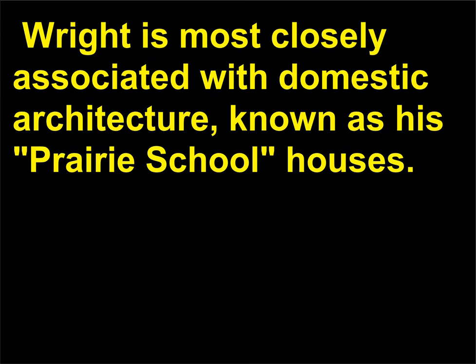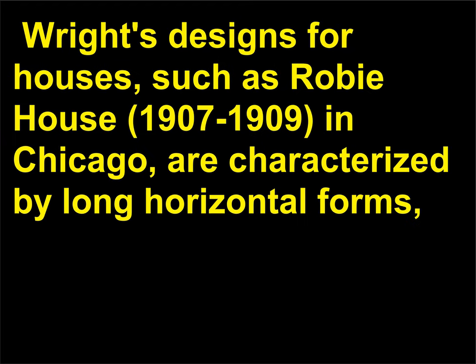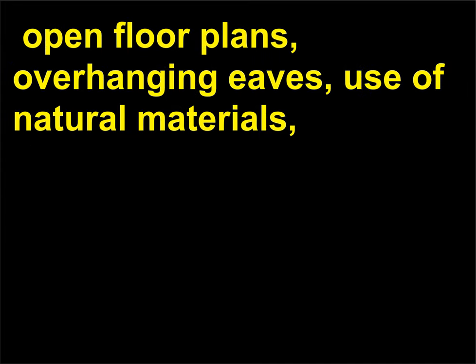Wright is most closely associated with domestic architecture, known as his Prairie School Houses. Wright's designs for houses — such as Robie House (1907–1909) in Chicago — are characterized by long horizontal forms, open floor plans, overhanging eaves, and use of natural materials, integrated with the flat landscapes of the Midwest.